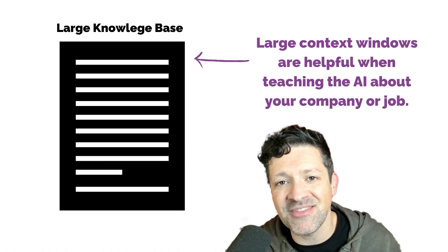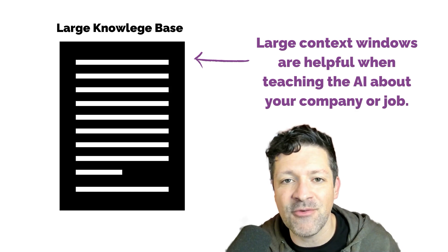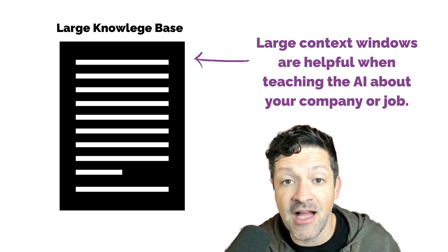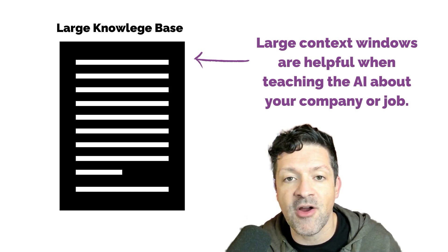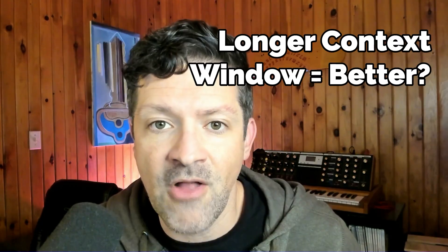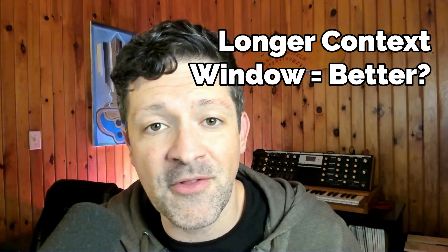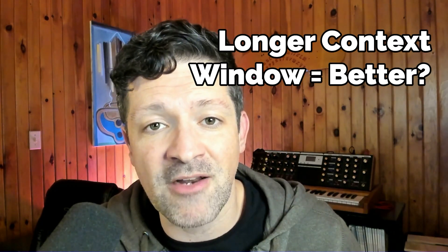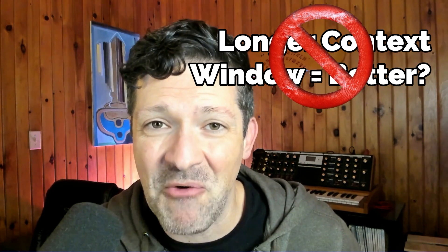As we all know, the prompt is the most critical part of working with large language models, and the context window is a key limitation on the usefulness of our prompts. The longer the context window, the more powerful the large language model becomes, right? Well, not really.